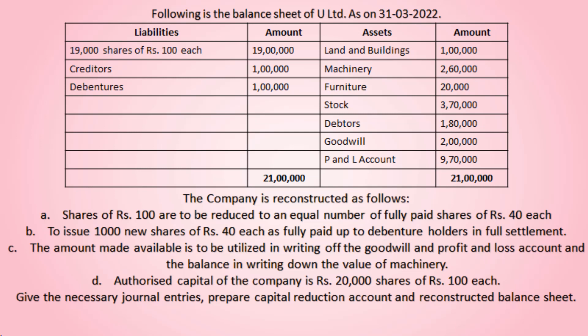The amount made available is to be utilized in writing off the goodwill and profit and loss account, and the balance in writing down the value of machinery. So whatever the capital reduction account balance we get, using that we need to write off first goodwill and P&L account. Apart from that, whatever balance is left over, we need to reduce the value of machinery.